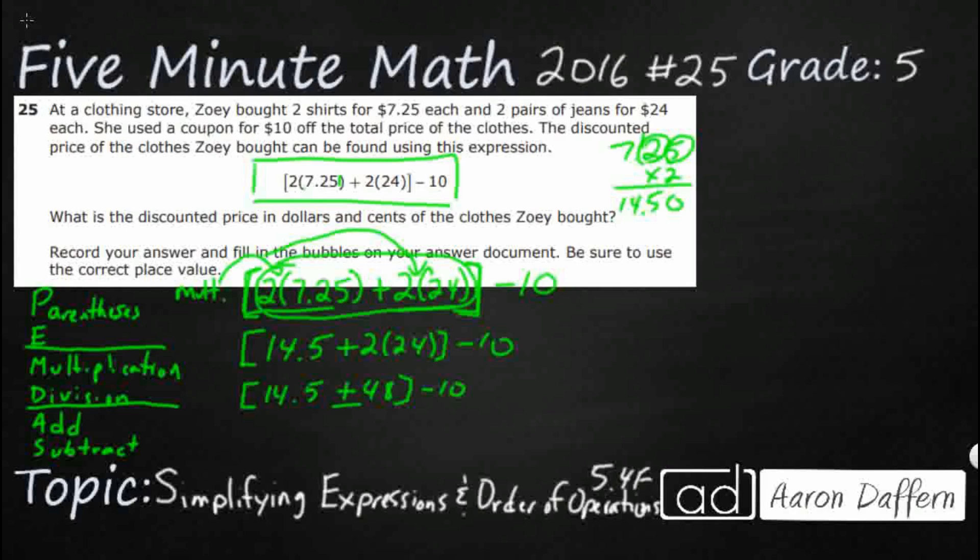I need 14.5 plus 48. Let's just go ahead and stack it up right there. 48 is lined up right there, because that's where the decimal would go. I've got 0.5. And then, I've got 12. I've got 62.5. This whole bracket simplifies down to 62.5.